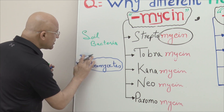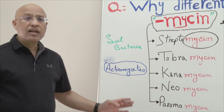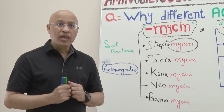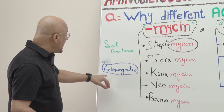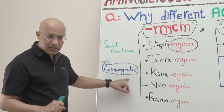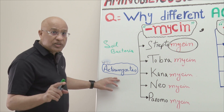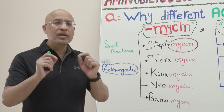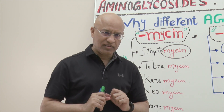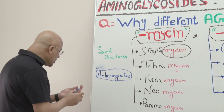Actinomycetes is a very large group of bacteria, and it is an unending source of antibiotics. Most of the antibiotics you know and use today are basically derived from actinomycetes — especially its genus Streptomyces. The first antibiotic, penicillin, was not from actinomycetes, but later we discovered actinomycetes is a never-ending source of antibiotics, antifungals, and even anti-cancer drugs.